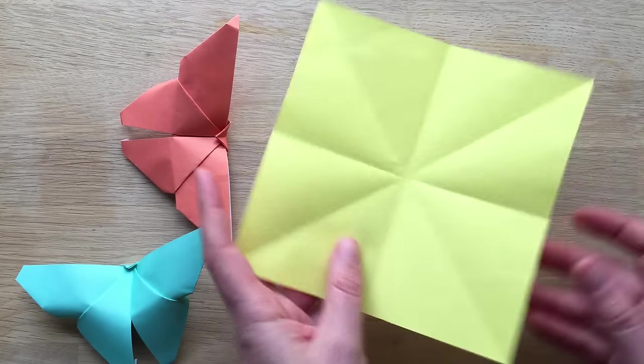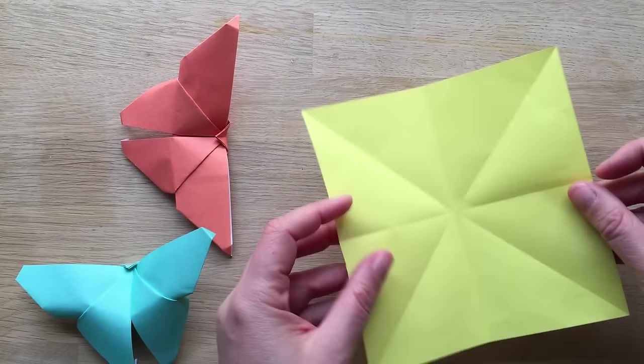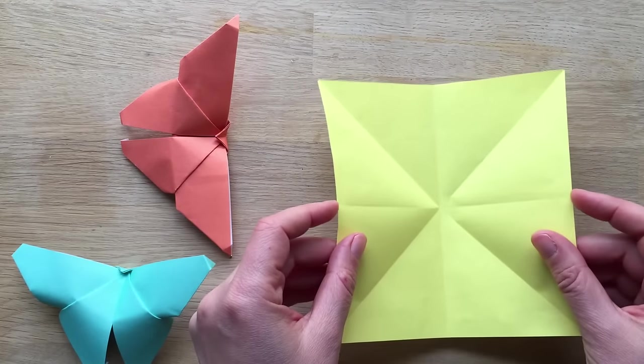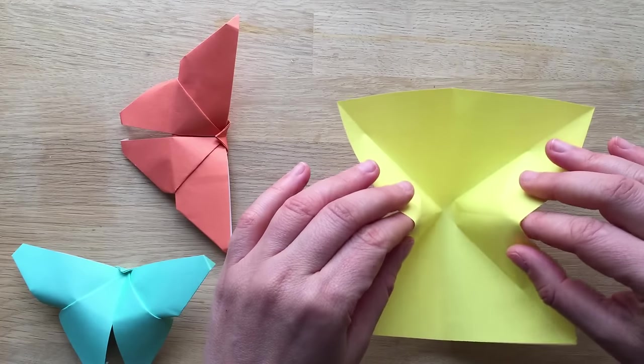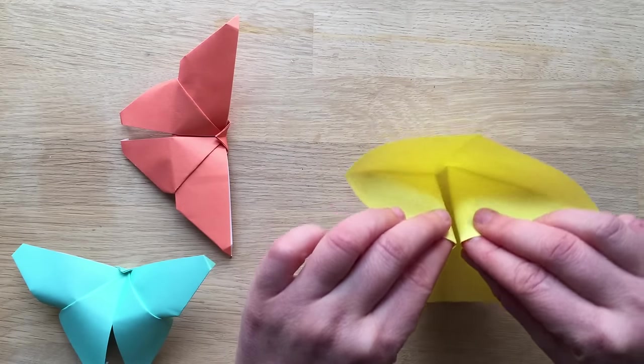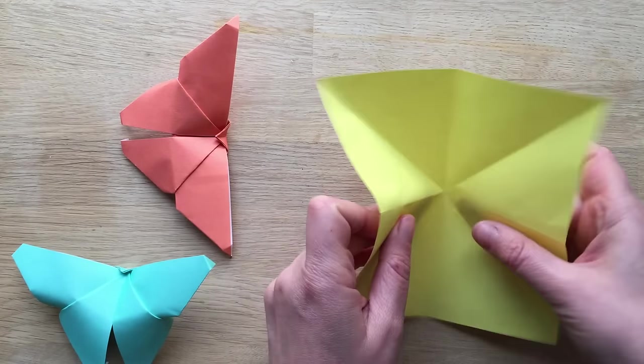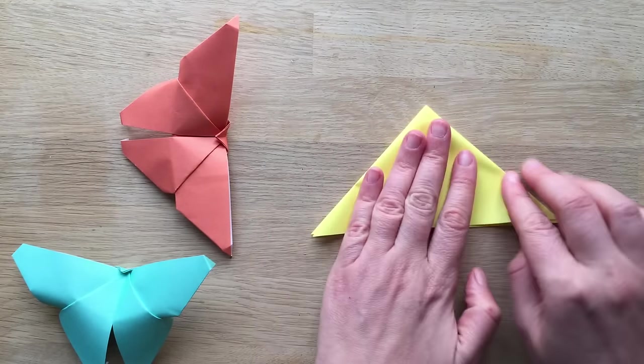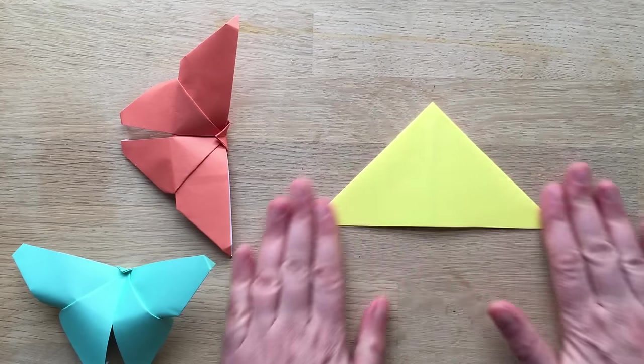Now you need to just take either this side or that side, doesn't really matter, and you bring these, so where the folds are, bring them together like this, can you see, and then gently fold it down like this. See that?